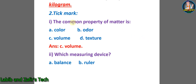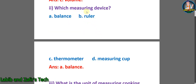Now let's go through some tick marks. Number one: the common property of matter is — A) color, B) odor, C) volume, D) texture. The common property of matter is volume, so the answer is C. Number two: which is a measuring device — A) balance, B) ruler, C) thermometer, D) measuring cup? The correct answer is A, balance.